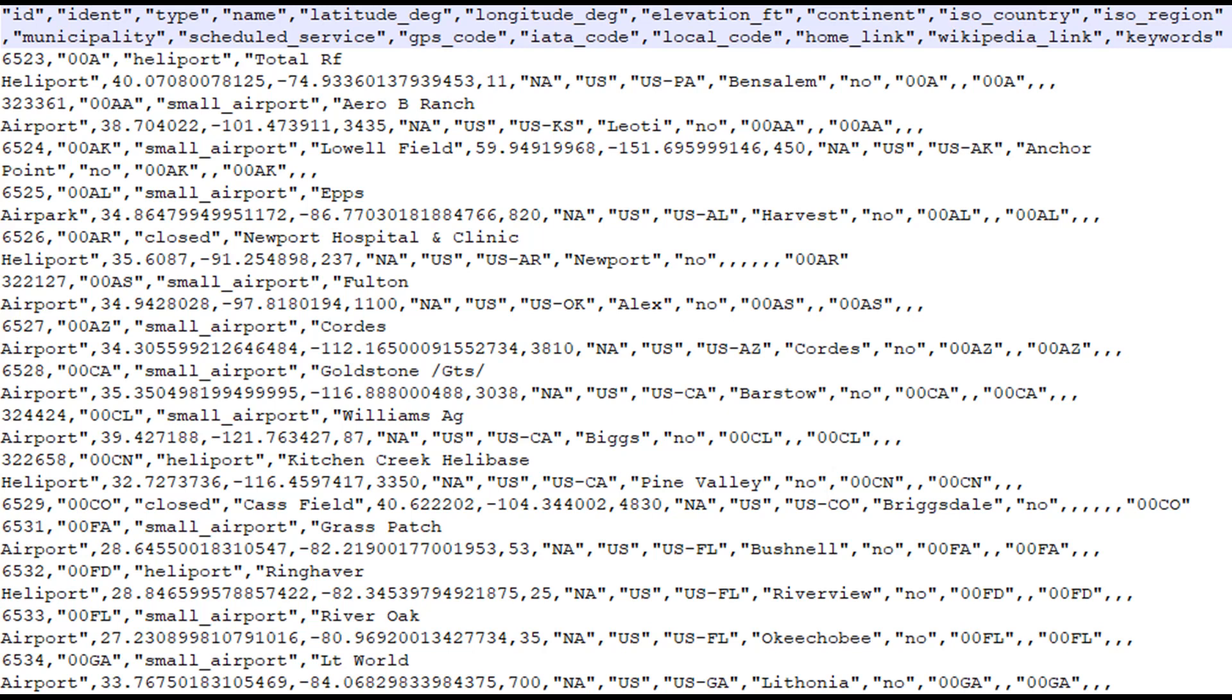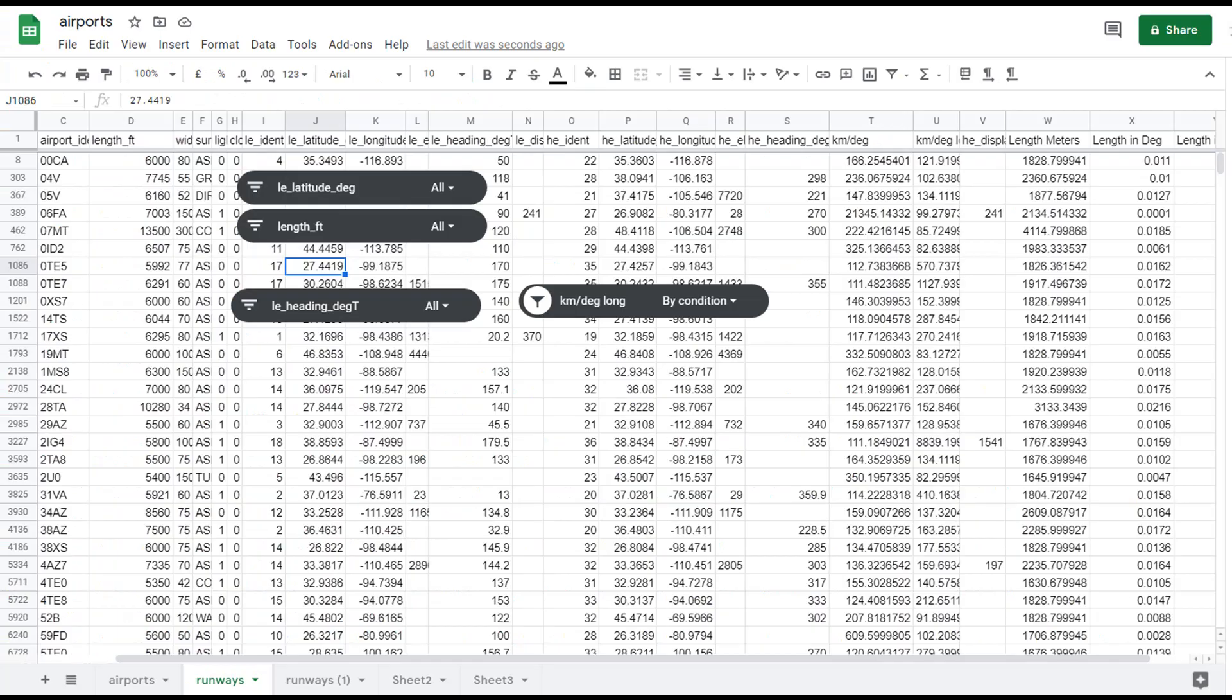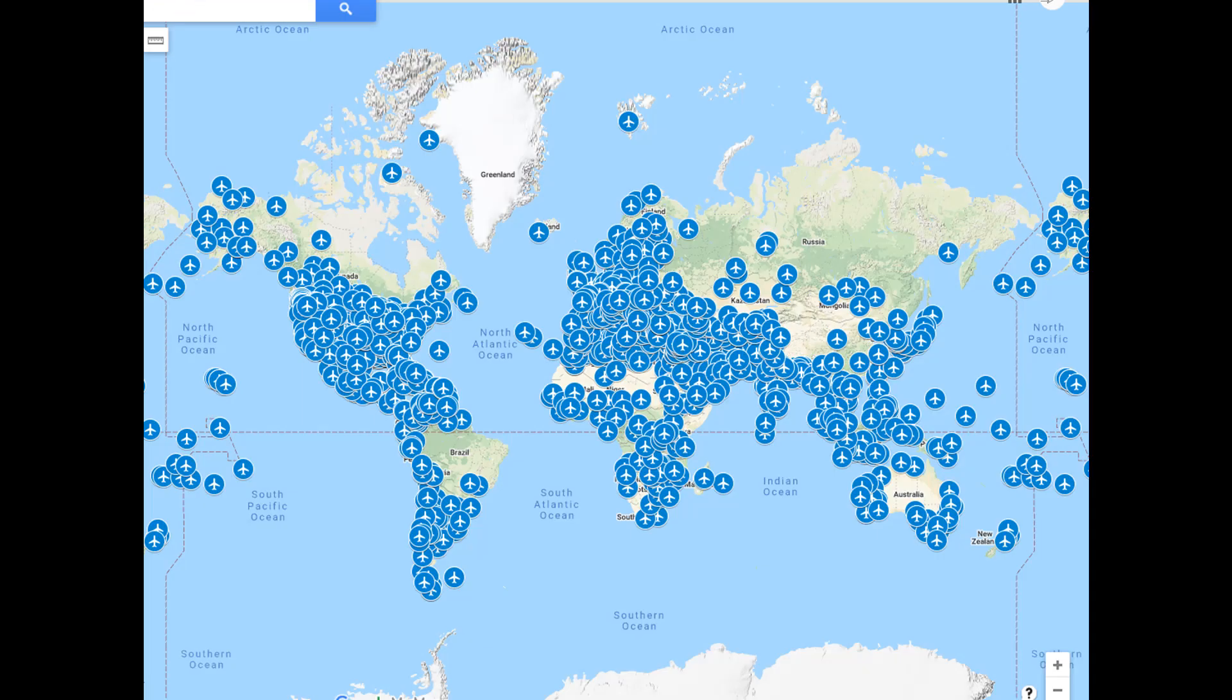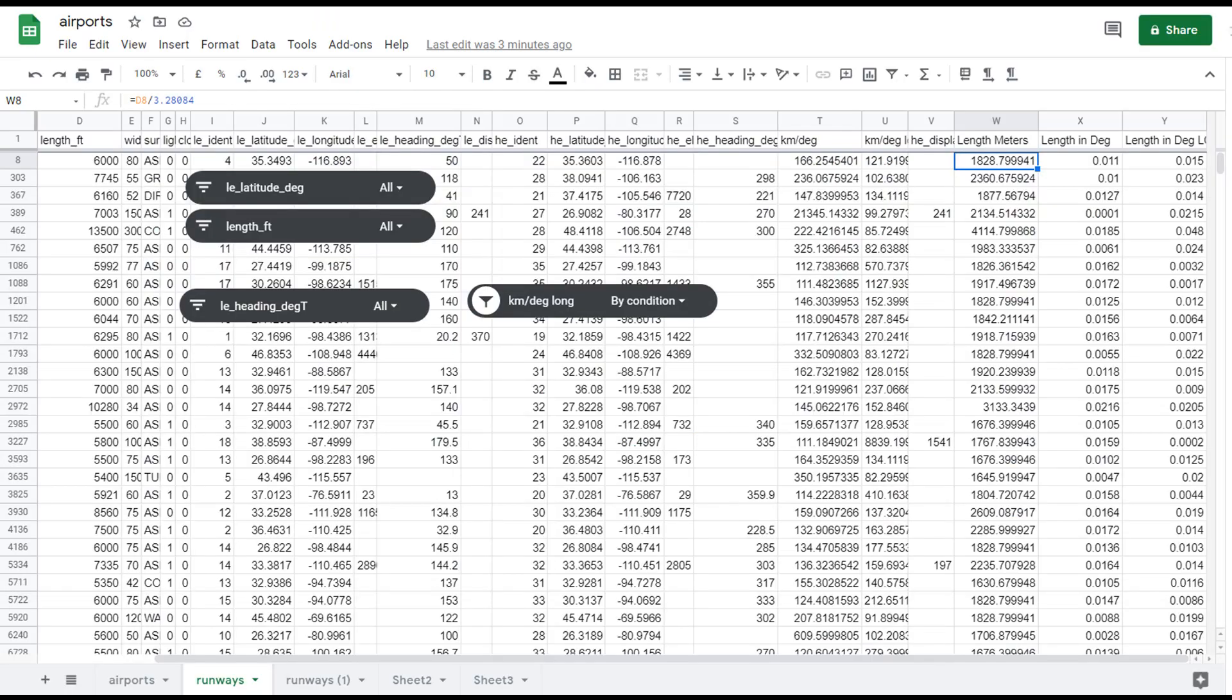The first thing I limited was the length to a mile or more. Then I wanted only runways that had GPS location set. And then I set the angle to 90 degrees plus or minus 10, so from 80 to 100 degrees. That gave me about 1,300 runways, basically east-west. The database had locations for both ends of the runway as well, and that was really lucky. The database also had the length in feet for the runway.